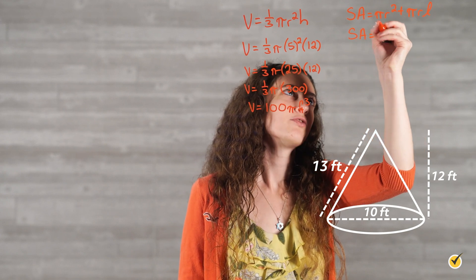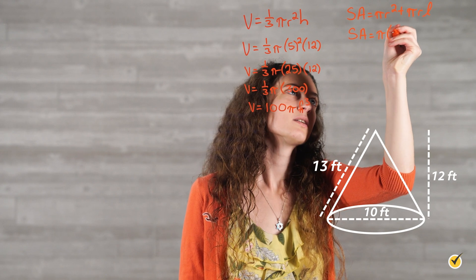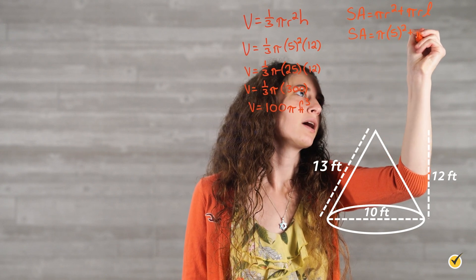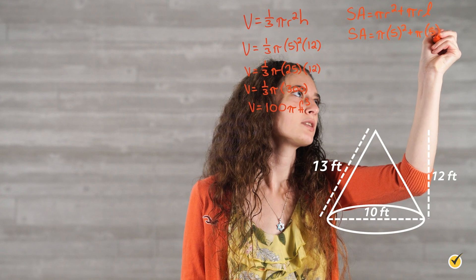When we plug in our known variables, we get pi times 5 squared plus pi times 5 times 13.